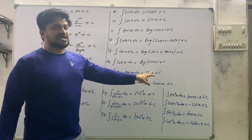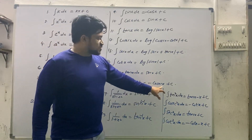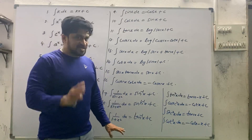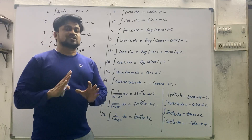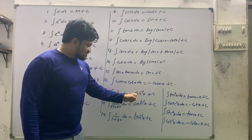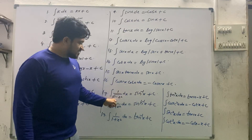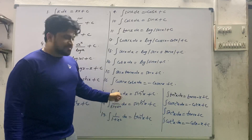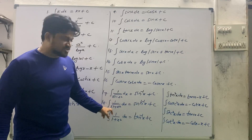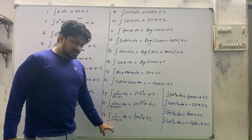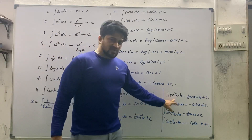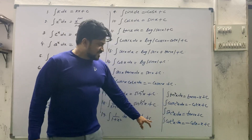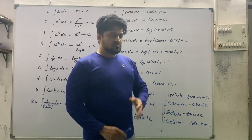Further: integral sec x · tan x dx = sec x + c; integral cosecant x · cot x dx = −cosecant x + c; integral 1/√(1−x²) dx = sin⁻¹x + c; integral 1/√(1+x²) dx = sinh⁻¹x + c; integral 1/(1+x²) dx = tan⁻¹x + c; integral tan²x dx = tan x − x + c; integral cosecant²x dx = −cot x + c; integral sec²x dx = tan x + c; integral cot²x dx = −cot x − x + c.